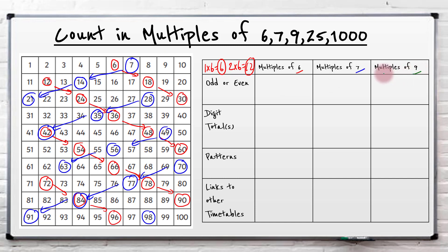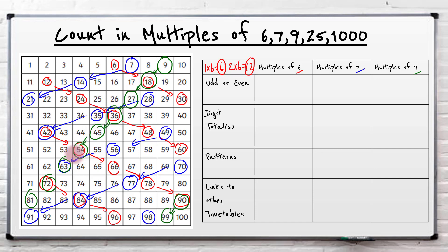Let's look for the 9's. Multiples of 9 - remember just count up with 9's. We've got 9, 18, 27. And you should start to see very quickly the pattern with the 9's - it's literally diagonally down all the way from one side of the 100 grid to the other. Don't forget the final two: the 90 and the 99. It's diagonal perfectly all the way down.